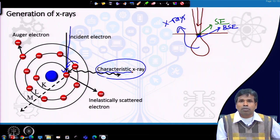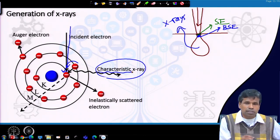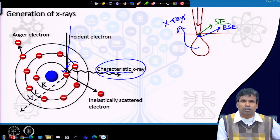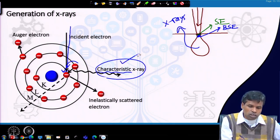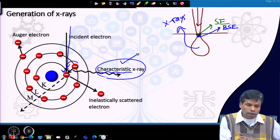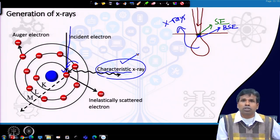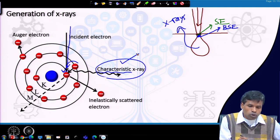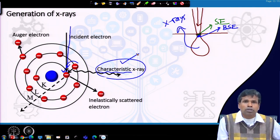All atoms have different electron configurations and their energy levels are different. Since the energy shells are at different energy levels, the transitions produce X-rays of different energy. By measuring the energy of these characteristic X-rays, we can tell which transition occurred and which atom it belongs to — thus identifying which atom is present and what percentage of that atom is in the specimen.